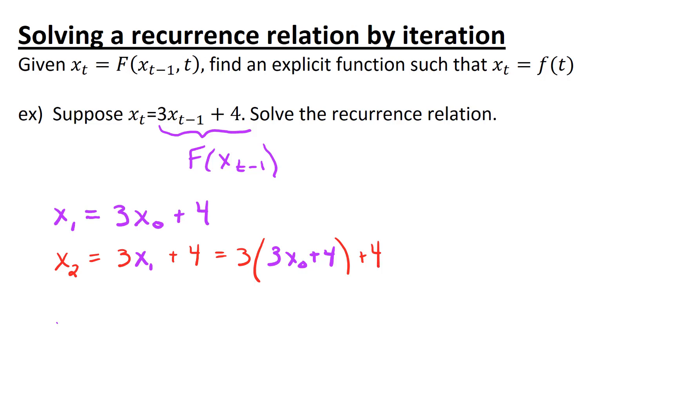And so if we tidy this up, what it looks like we have here is 3 squared times x0 plus 3 times 4 plus 4. And I know that you could work this out and call it 9x0 plus 12 and so forth, but it's very helpful for observing the pattern if you actually leave it as is. And you'll see what I mean in a minute.